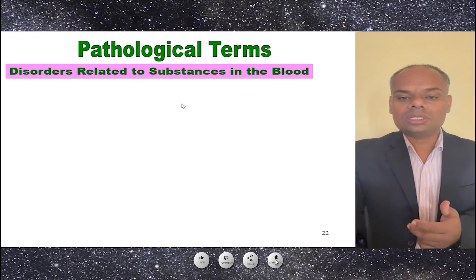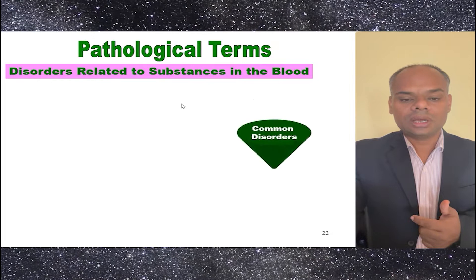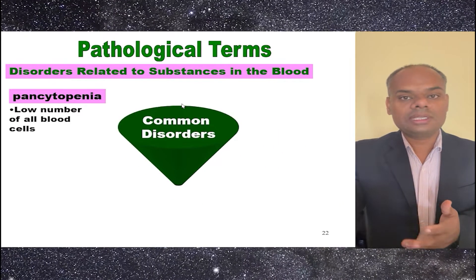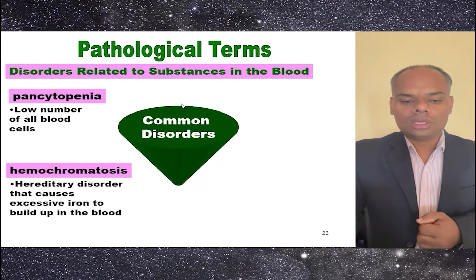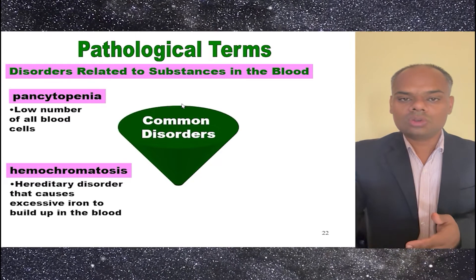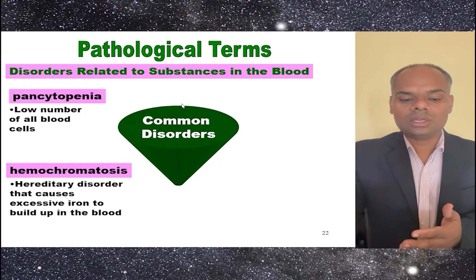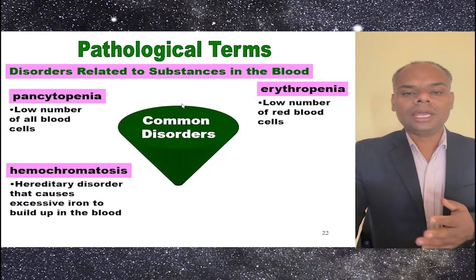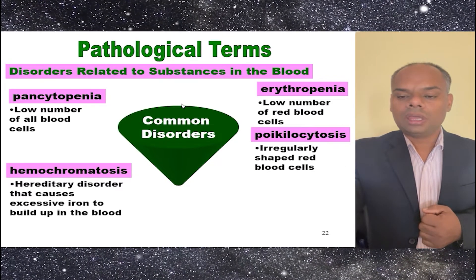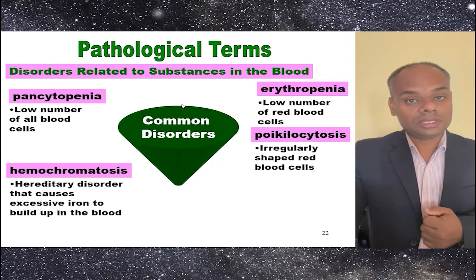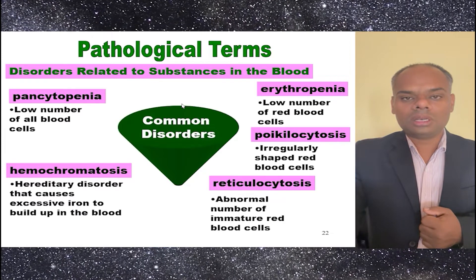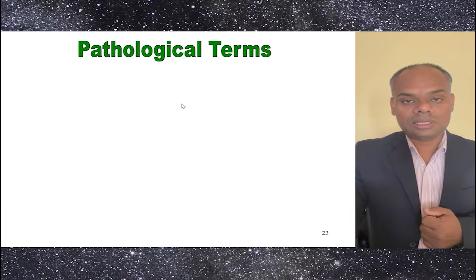Common disorders related to substances in the blood include pancytopenia, which is a low number of all blood cells. Hemochromatosis is a hereditary disorder that causes excessive iron buildup in the blood. Erythropenia is a low number of RBC cells. Poikilocytosis refers to irregularly shaped RBC cells. Reticulocytosis is an abnormal number of immature RBC cells.